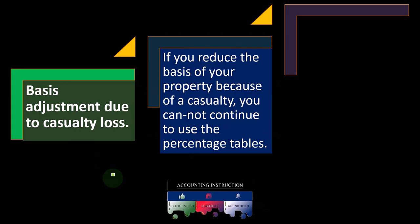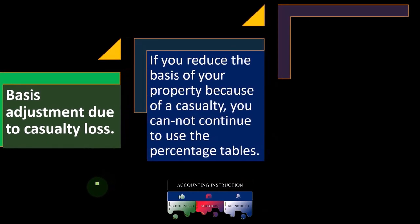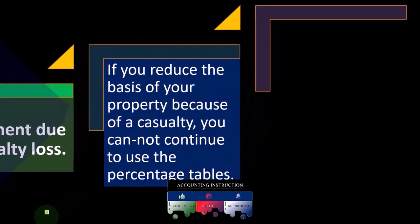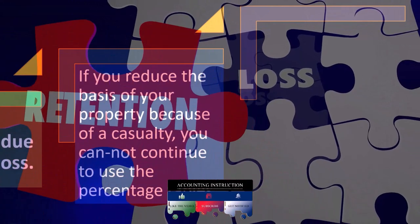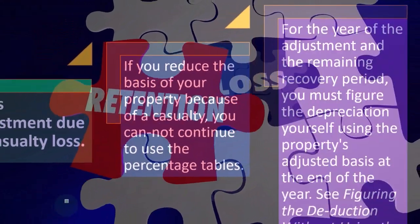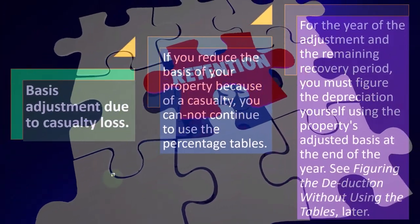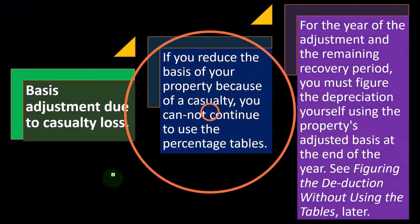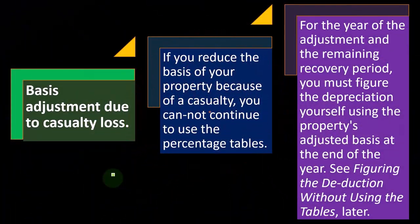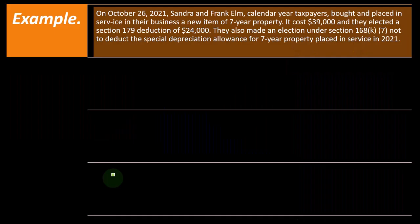Basis adjustments due to casualty loss. If you reduce the basis of your property because of a casualty, you cannot continue to use the percentage tables for the year of the adjustment and the remaining recovery period. You must figure the depreciation yourself using the property's adjusted basis at the end of the year — see figuring the deduction without using the tables later.